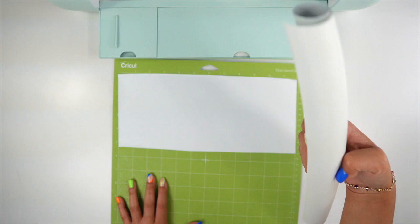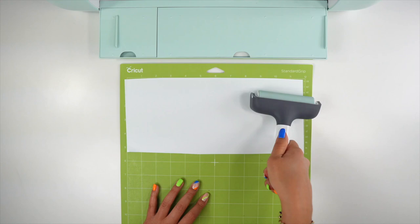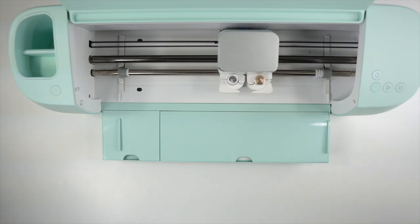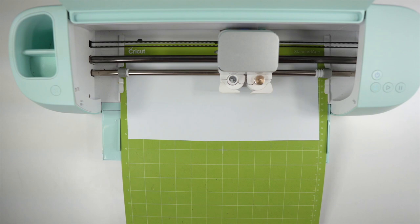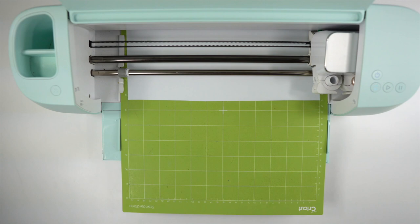I'm using the scraper tool to make sure everything is nicely adhered on the mat and to make sure there's no air bubbles. Load it into your Cricut machine and press the go button to cut.